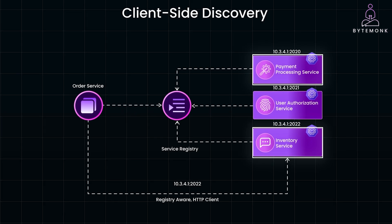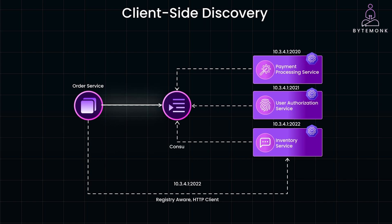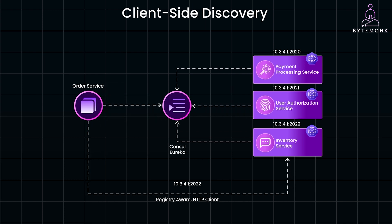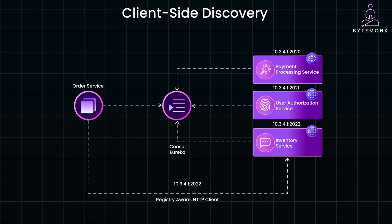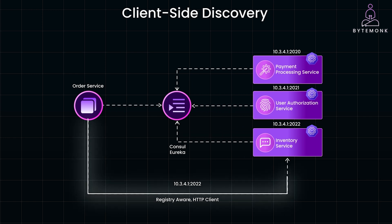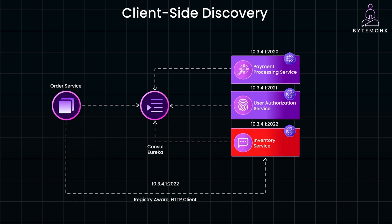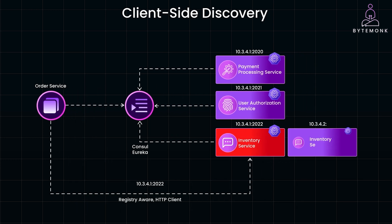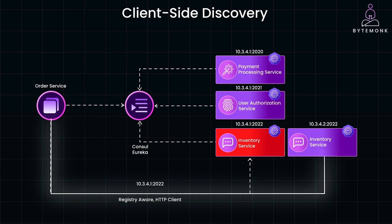With client-side discovery, your order service would ask a service registry like Consul or Eureka for the location of the inventory service. The registry responds with a list of available instances, and the order service selects one to send its request. This dynamic discovery means that even if a service instance goes down or gets moved to a new server, the system can automatically find other healthy instances.